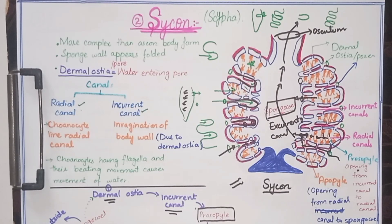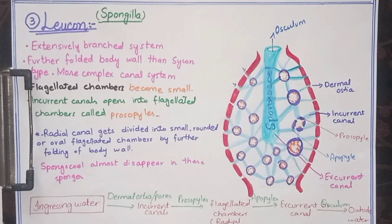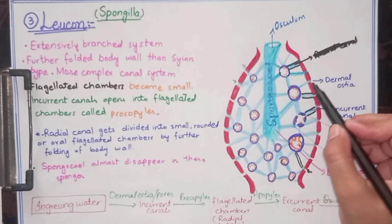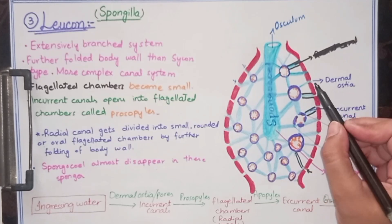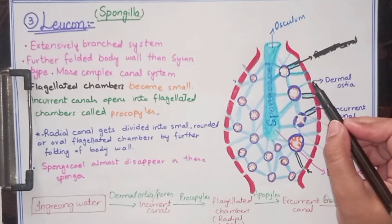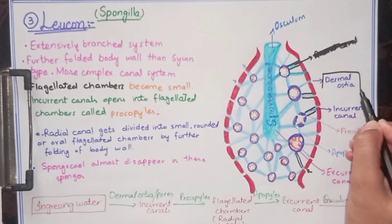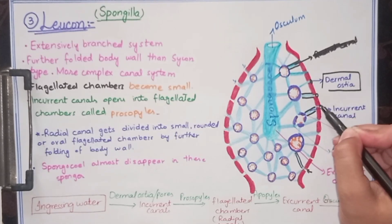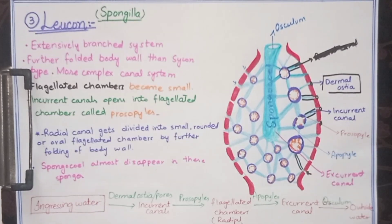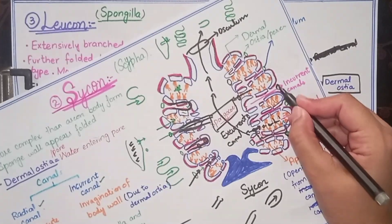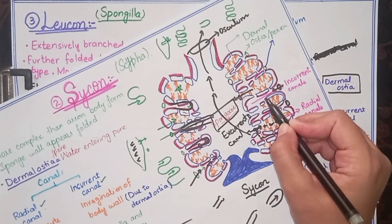Now we are going to talk about Leucon body form. Leucon body form is very advanced and very well developed. This type of body form is present in sponges. In Leucon body form, there are pores present at the pinacocyte surface. This pore is known as dermal ostia. While in Sycon body form there is a dermal pore present, in Leucon it is the dermal ostia.